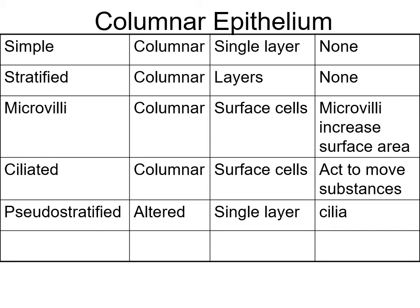Columnar epithelium consists of column-shaped cells. Simple columnar has just one layer with no modifications. Stratified has layers. Microvilli are common in the small intestine - simple columnar epithelium with microvilli lines the first part of the small intestine, increasing surface area for absorption. As food enters the small intestine, it's been changed in the mouth and stomach with enzymes, and enters as chyme - a shake-like consistency.